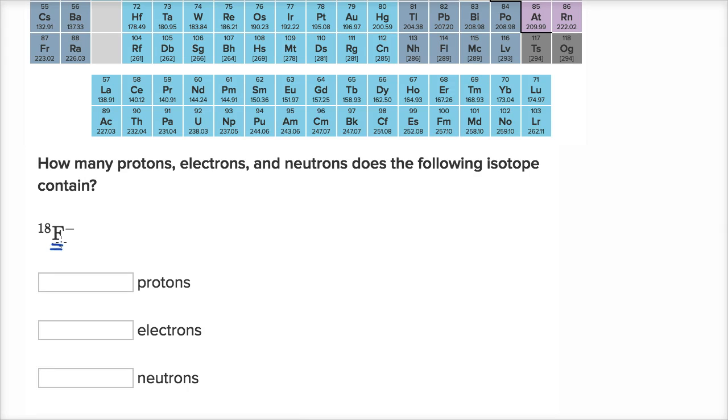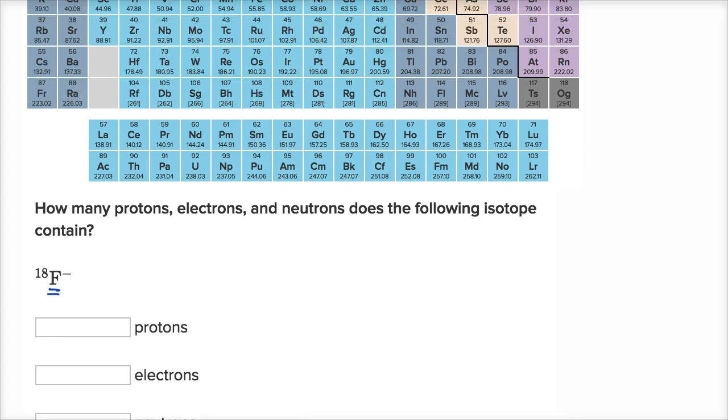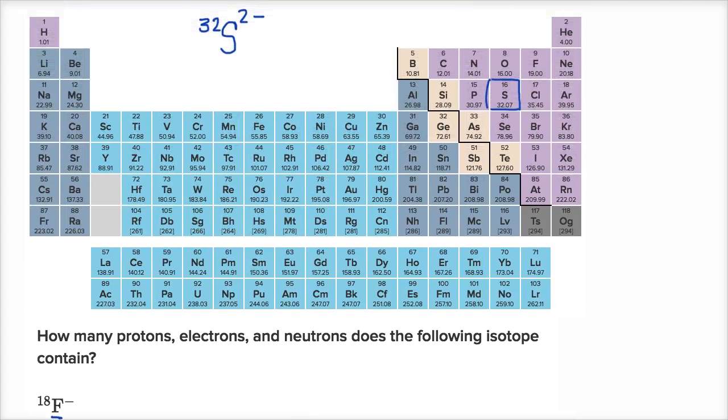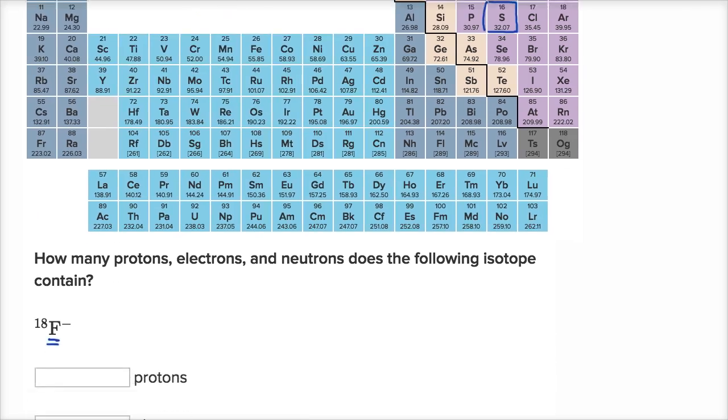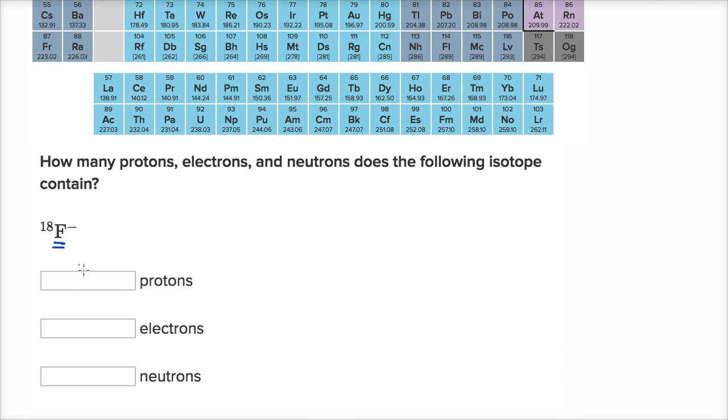Remember, atomic number is number of protons, and that's what defines the element. That's what makes this one fluorine. So let's go up to our periodic table. And we see fluorine right over here has an atomic number of nine. That means any fluorine has nine protons. So let's scroll back down. So just because it is fluorine, we know we have nine protons.